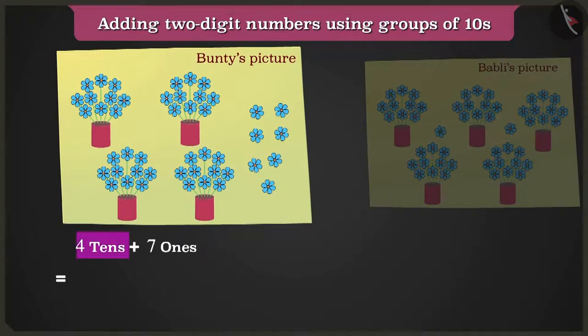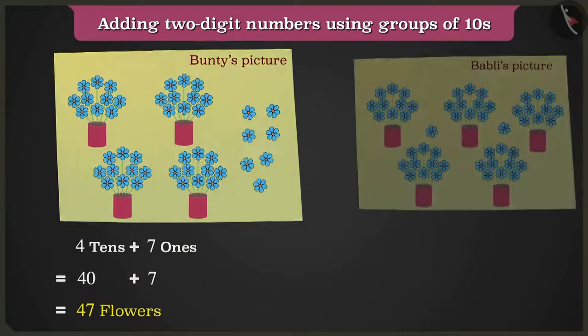In these, there are four tens that are forty and seven ones that are seven. Forty and seven in total, there are forty-seven flowers.